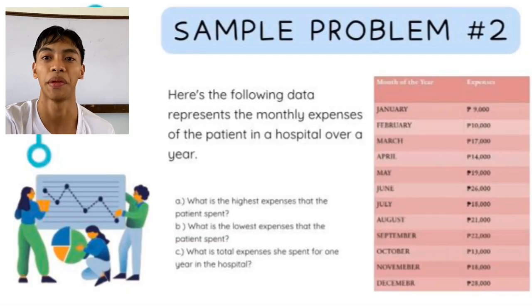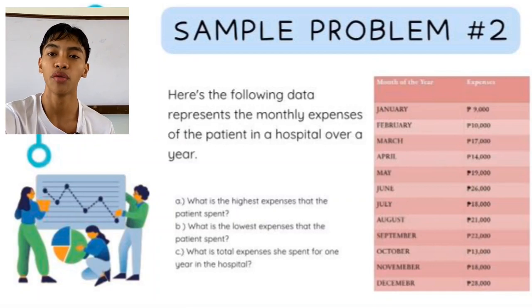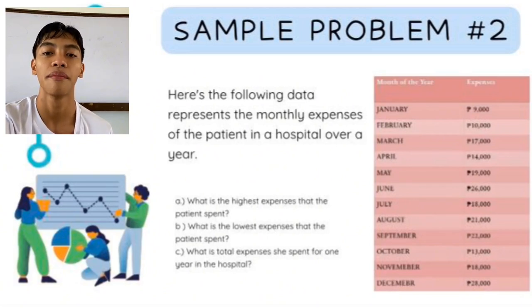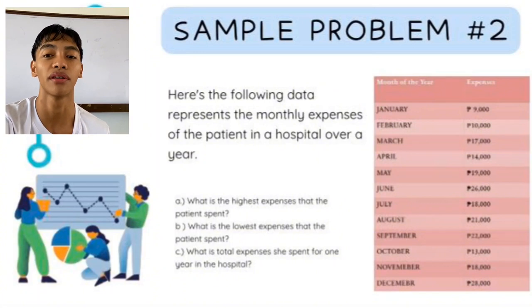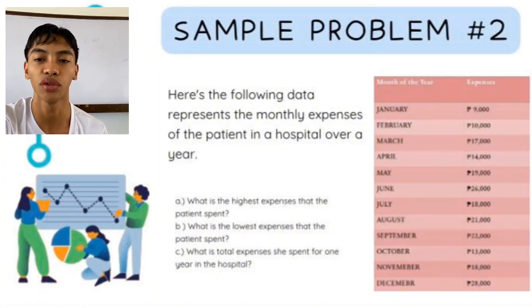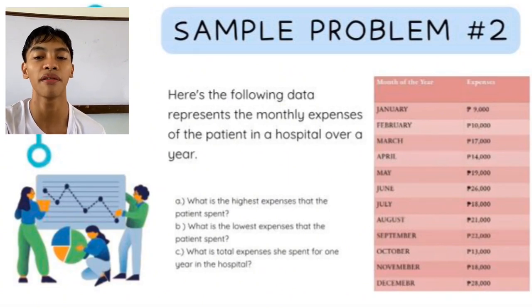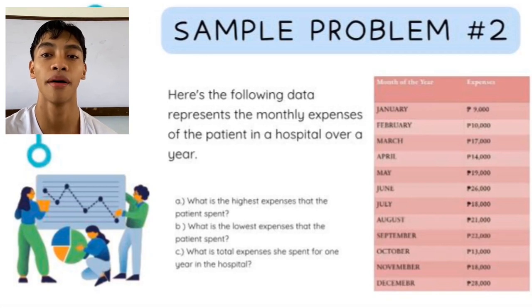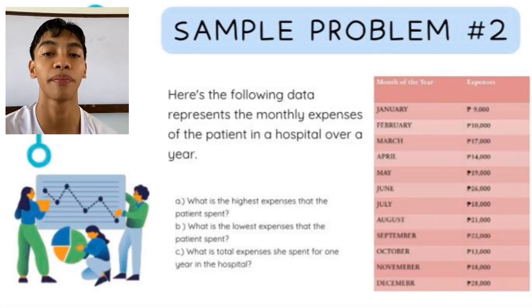Sample problem number two: The following data represents the monthly hospital expenses of a patient over a year — January: 9,000 pesos; February: 10,000; March: 17,000; April: 14,000; May: 19,000; June: 26,000; July: 18,000; August: 21,000; September: 22,000; October: 13,000; November: 18,000; December: 28,000 pesos. Questions: What is the highest expense? What is the lowest expense? What is the total expense for one year?